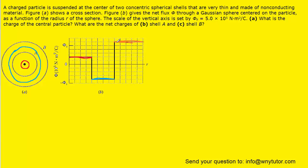Finally, the electric flux colored in orange corresponds to very large values of the radius. In this diagram, that corresponds to a Gaussian surface that encloses the entire structure.